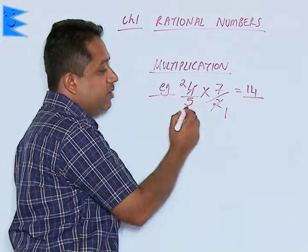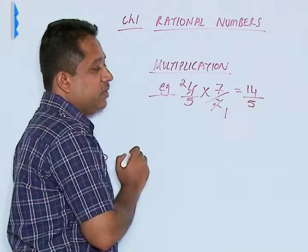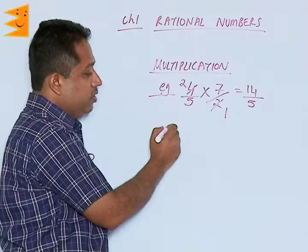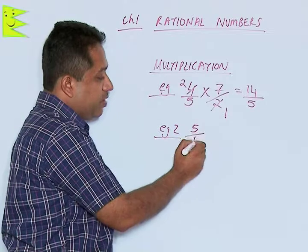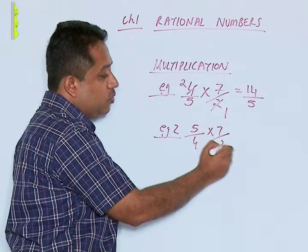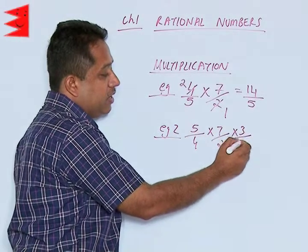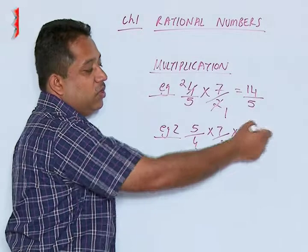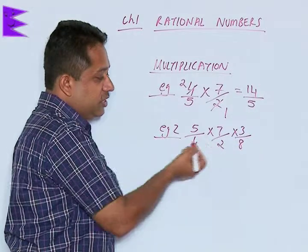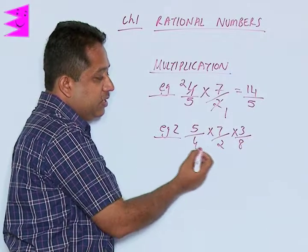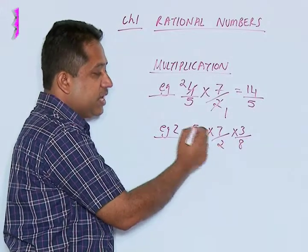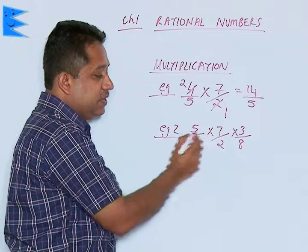We could also multiply three or more fractions, like 5 by 4 into 7 upon 2 into 3 by 8. The process remains identical—we will see whether there are any numbers which are common and can be canceled. In this case, we find that there's nothing which can be canceled.